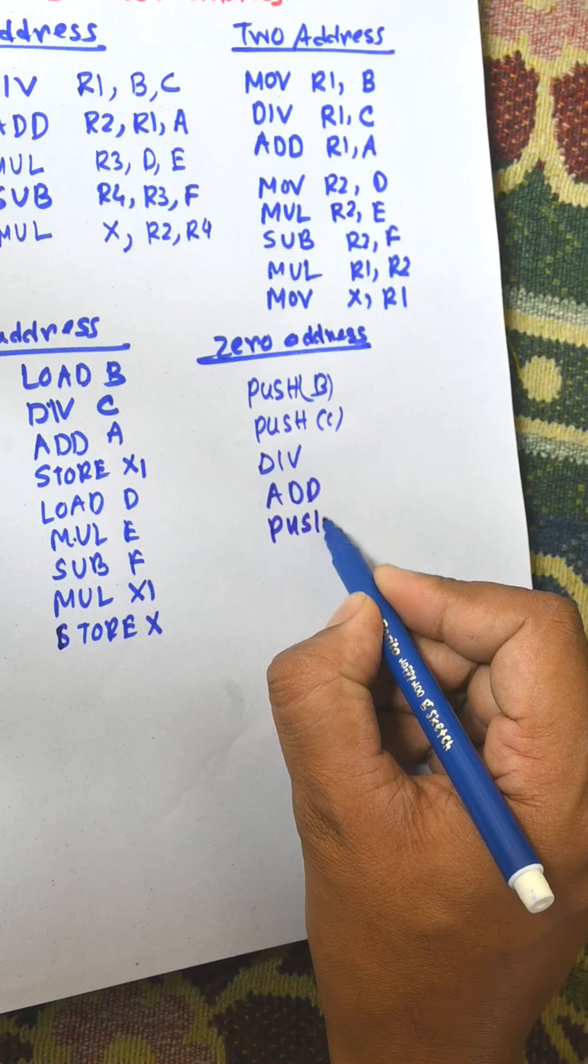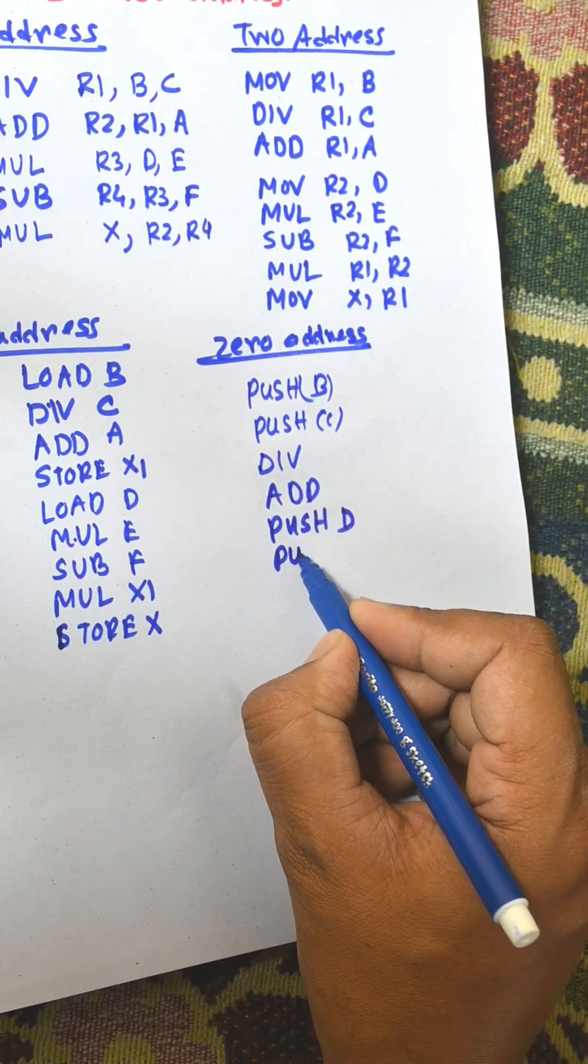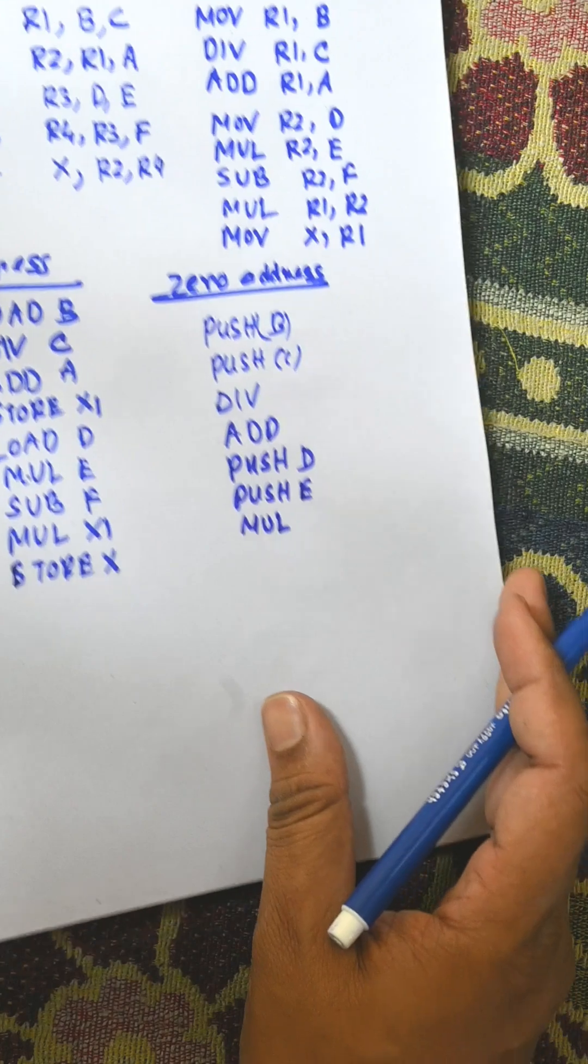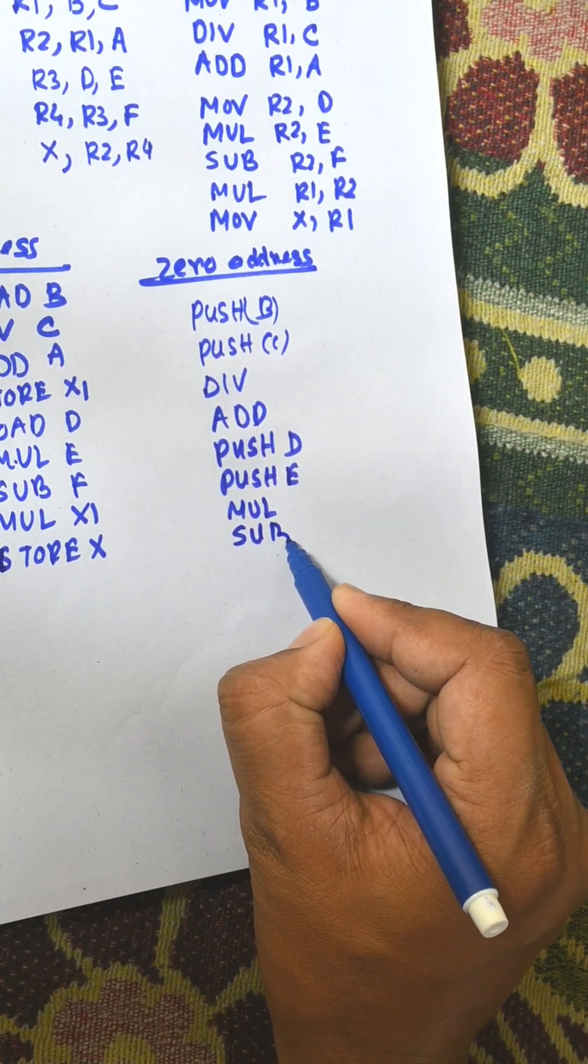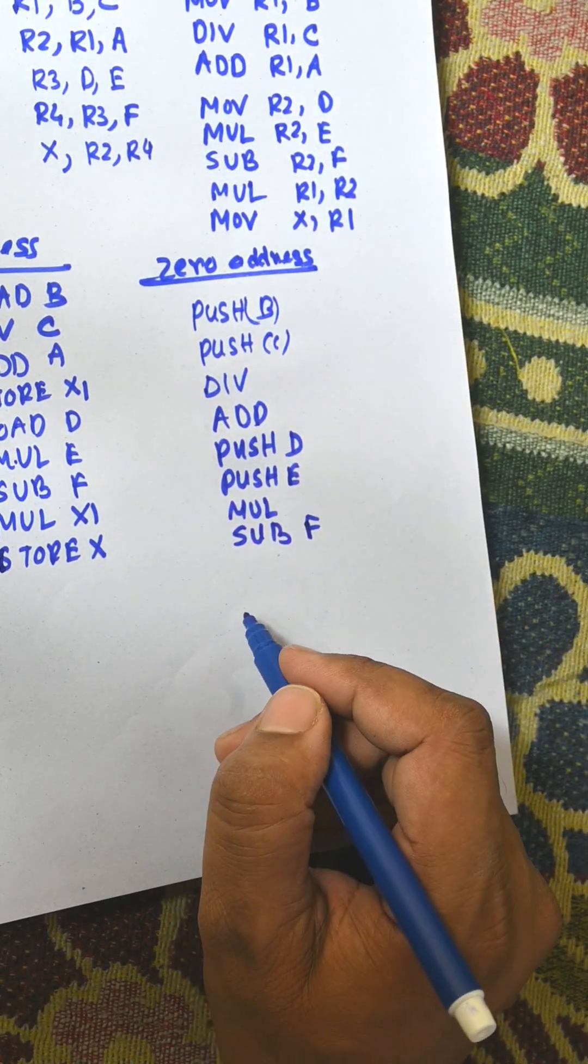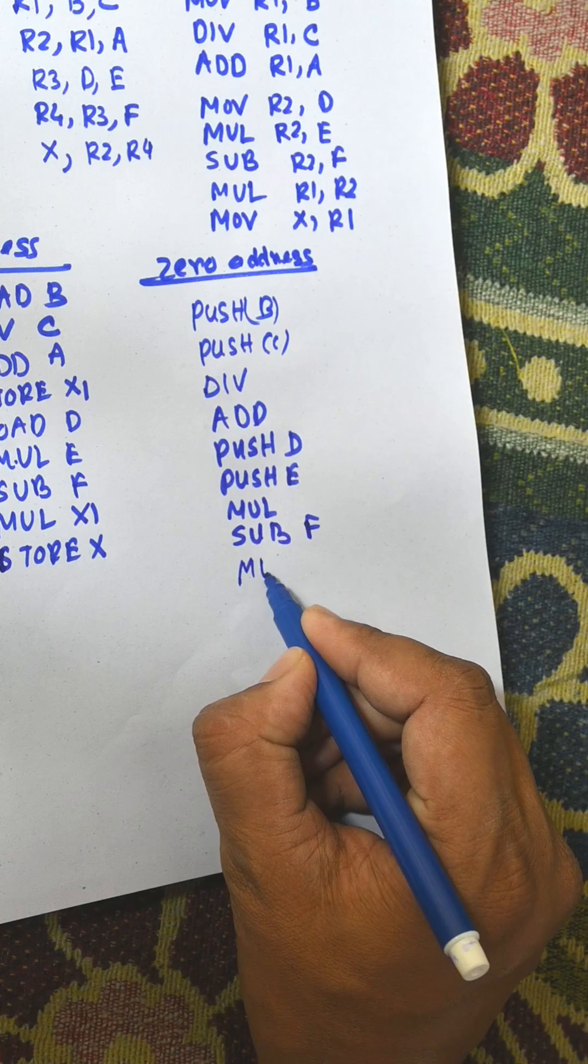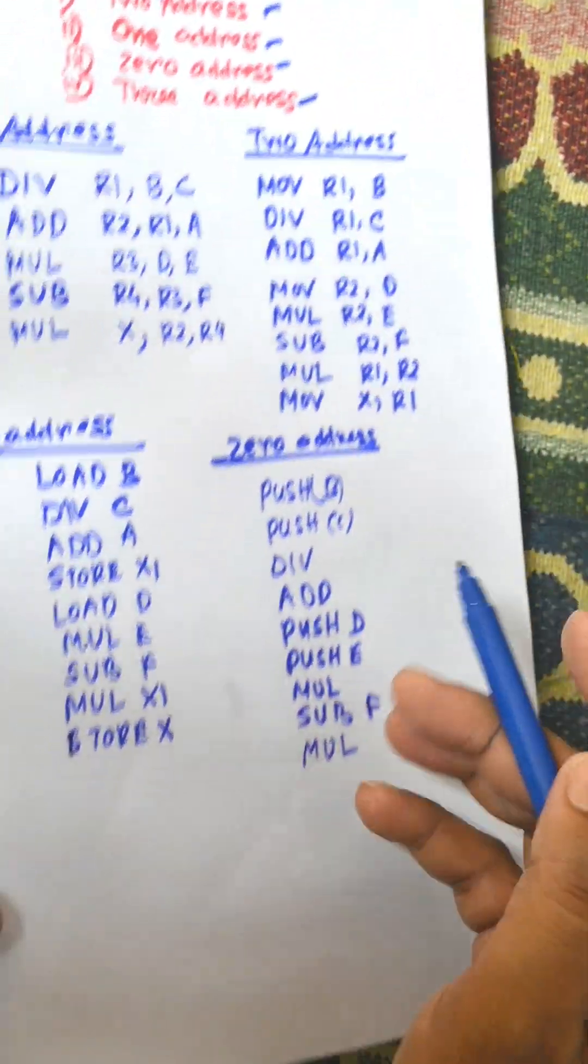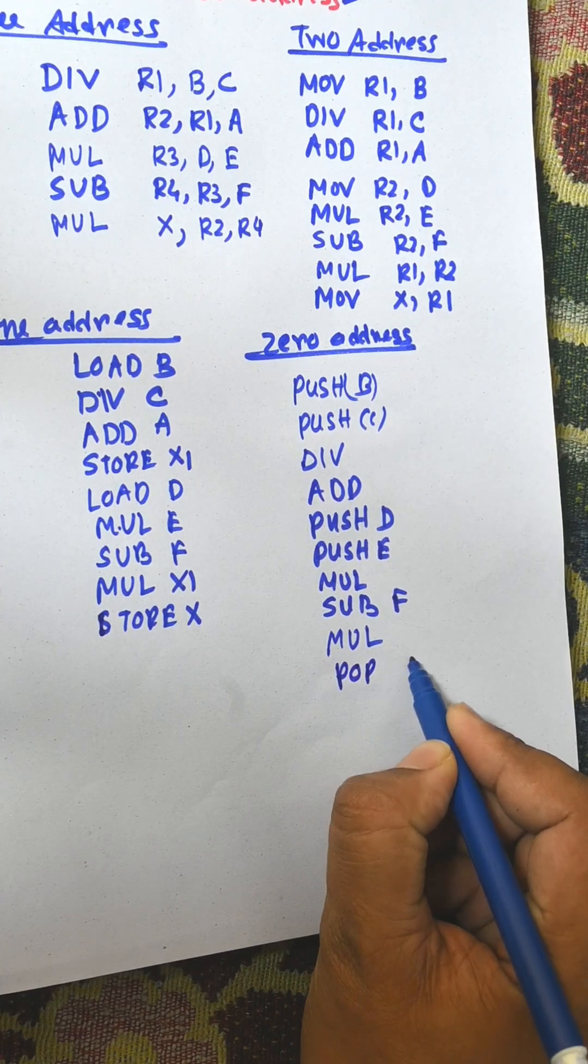D, push E, multiply the result, subtraction with A, and multiply the result of this bracket and this bracket. The final result is pop to x.